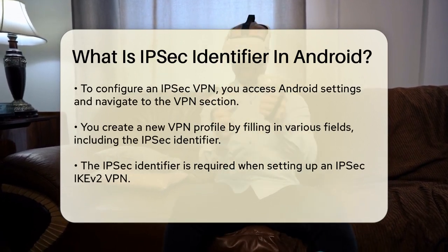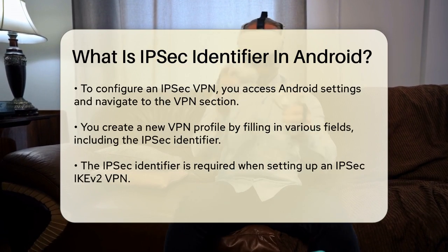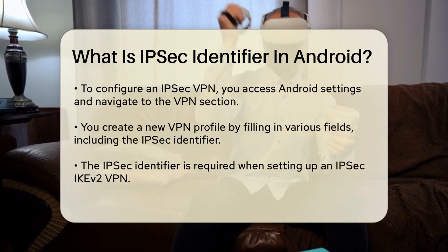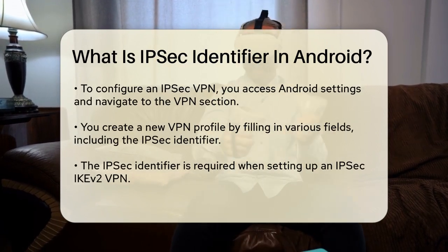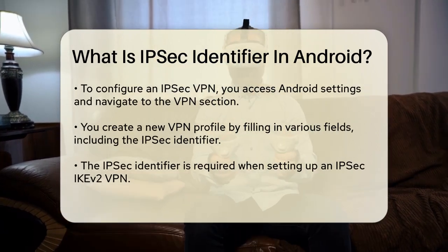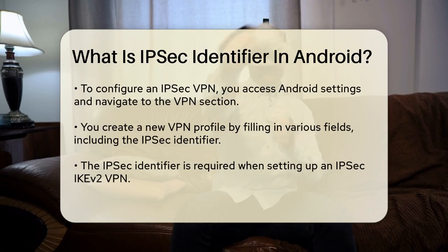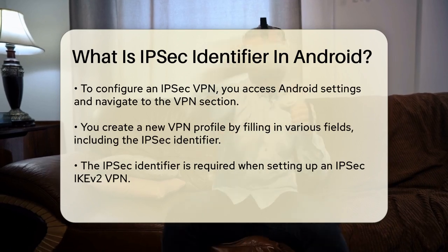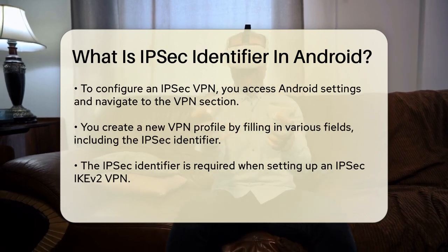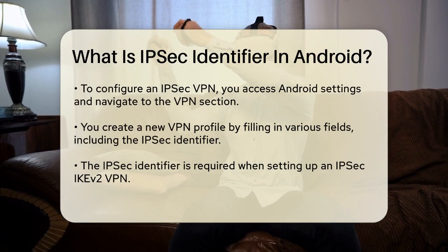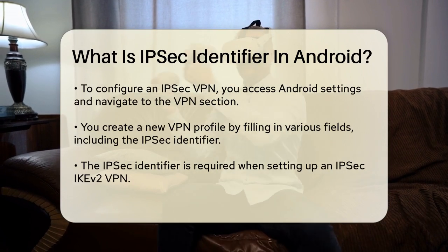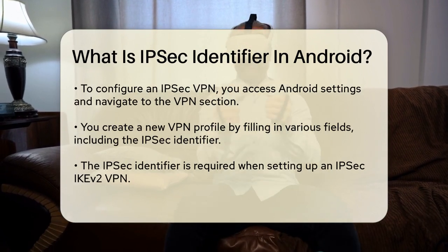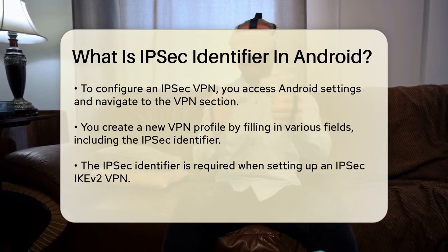To set this up, you typically go into your Android settings, navigate to the VPN section, and add a new VPN profile. When you're on the Edit VPN Network page, you'll see fields for the name, type, server address, and other details. One of these fields is specifically for the IPSec Identifier.